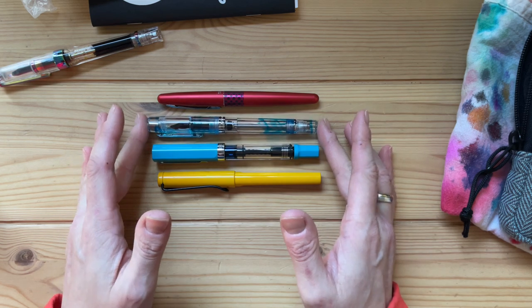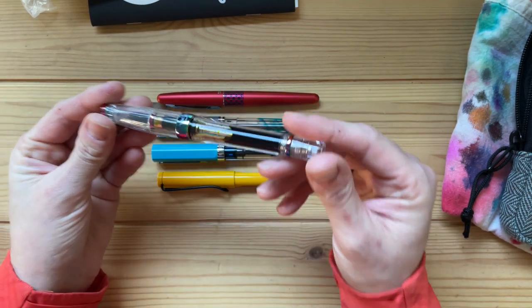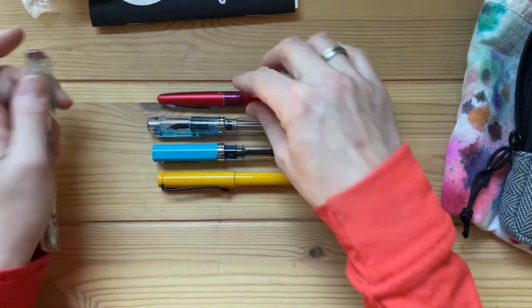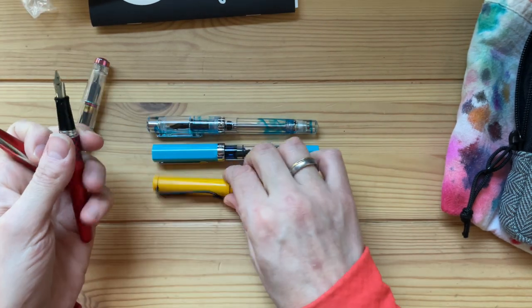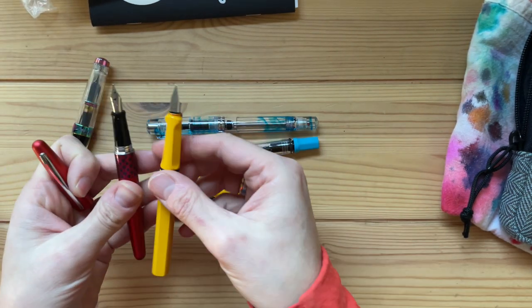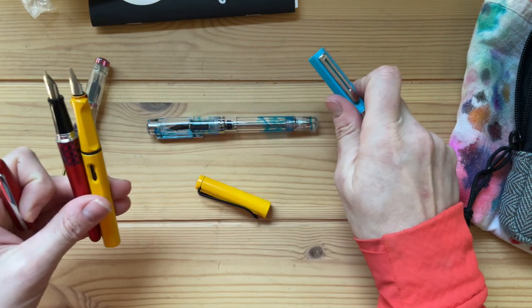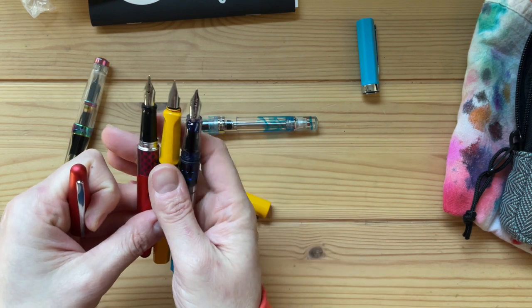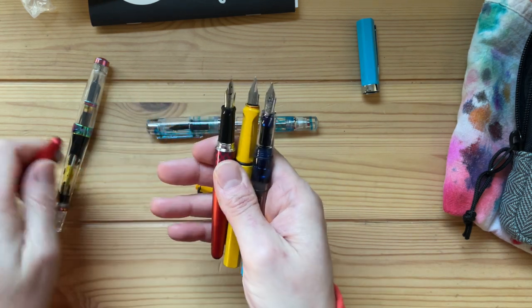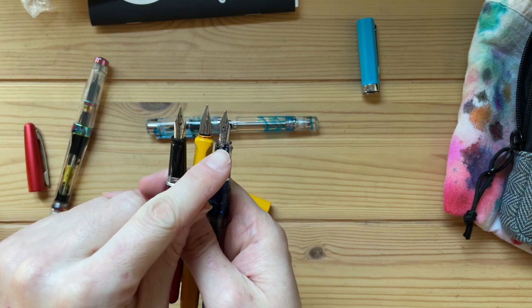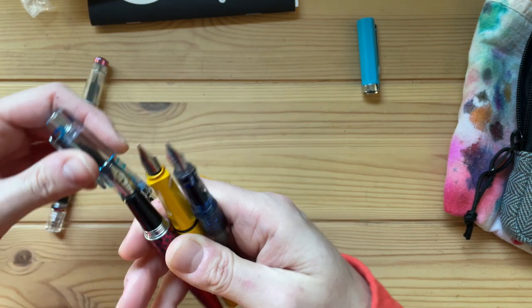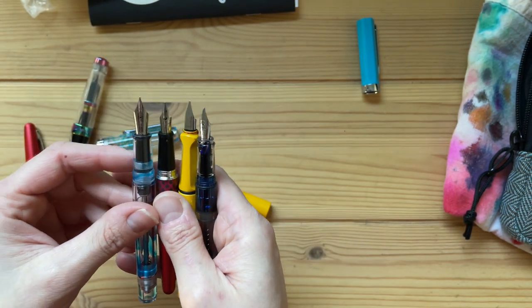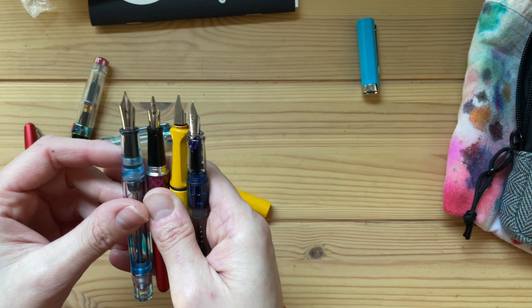This one is around $50. This is a comparable pen, also a vacuum filler. All of those pens have a number four size nib. These are number four size nibs. This one is a number six size nib. So you can see the size difference between those nibs.